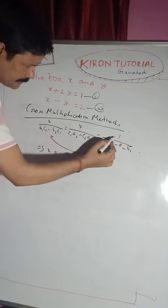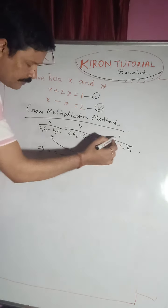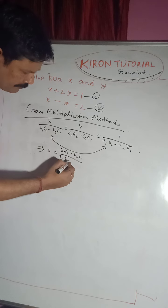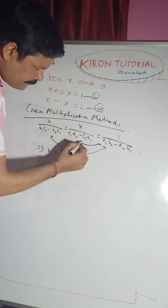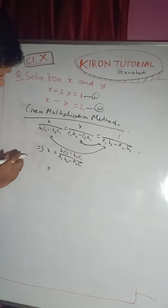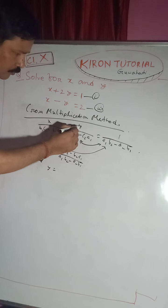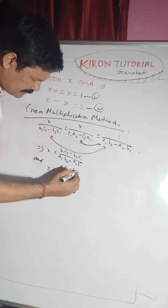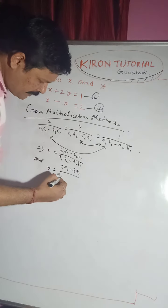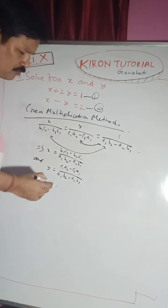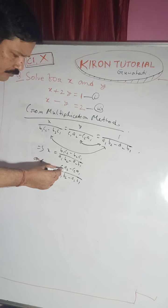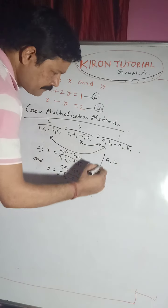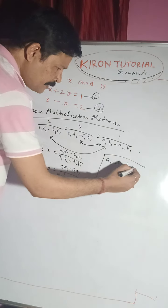From the formula, x equals (b1·c2 minus b2·c1) divided by (a1·b2 minus a2·b1), and y equals (c1·a2 minus c2·a1) divided by (a1·b2 minus a2·b1). Now compare with the standard form: a1·x plus b1·y plus c1 equals 0 and a2·x plus b2·y plus c2 equals 0.